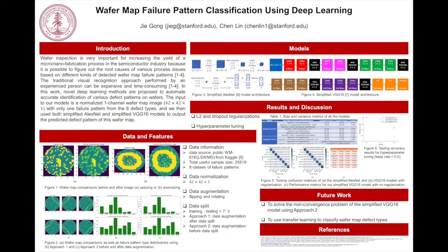Based on the wafer failure pattern, it is possible to figure out the root process cause. The data we used is open source data on Kaggle. There are a total of 25,000 wafer data with 8 different classes. One issue for this dataset is that the dimensions of the wafer map images are not the same, which prevents deep learning from being used. Therefore, we resized all the wafer maps to the same dimension, calculating the weighted average dimension as 42 by 42 pixels.